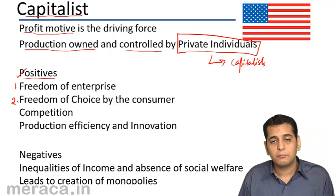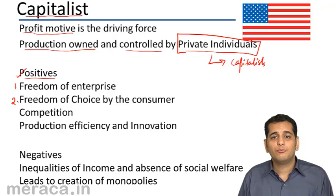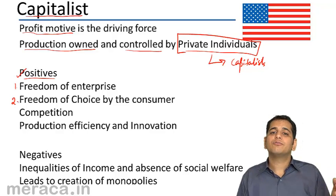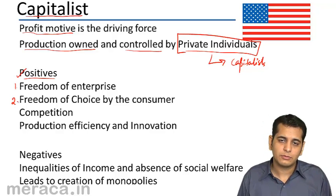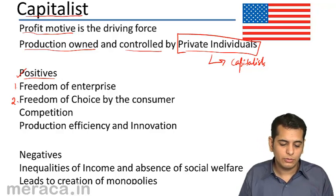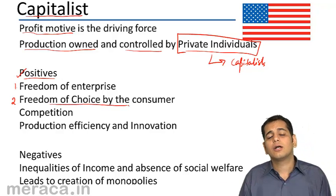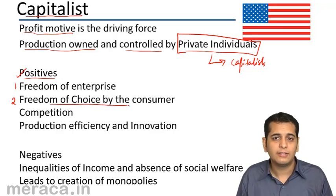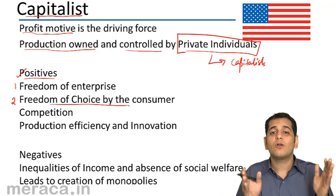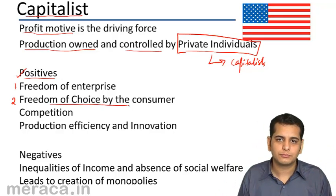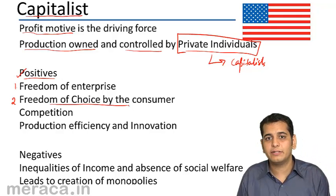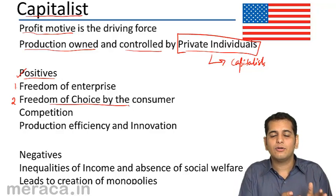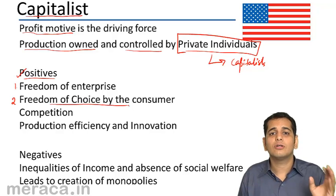Second is freedom of choice by the consumer. When the entrepreneurs get the freedom to produce what they want, a variety of goods get produced. This in turn leads to freedom of choice for the consumers — consumers get a variety of goods to choose from, they can consume whatever they want. There is no restriction on consumption; the government does not set any restriction on consumers.